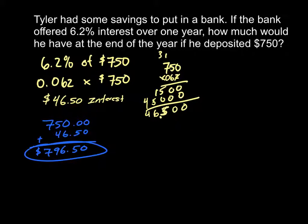Another way you could look at this is we're starting with our 100% and we're adding 6.2%, where 100% is your initial $750 and the 6.2% is the interest. And if we add those together, you get 106.2%,